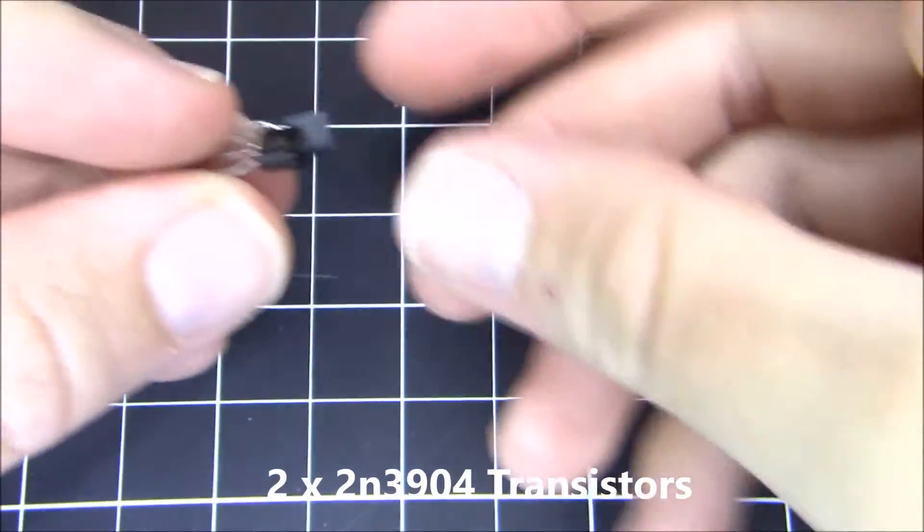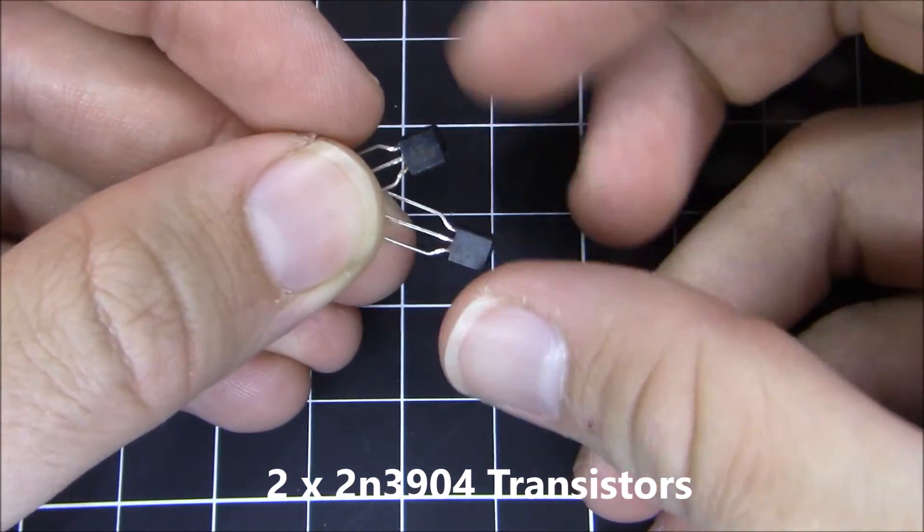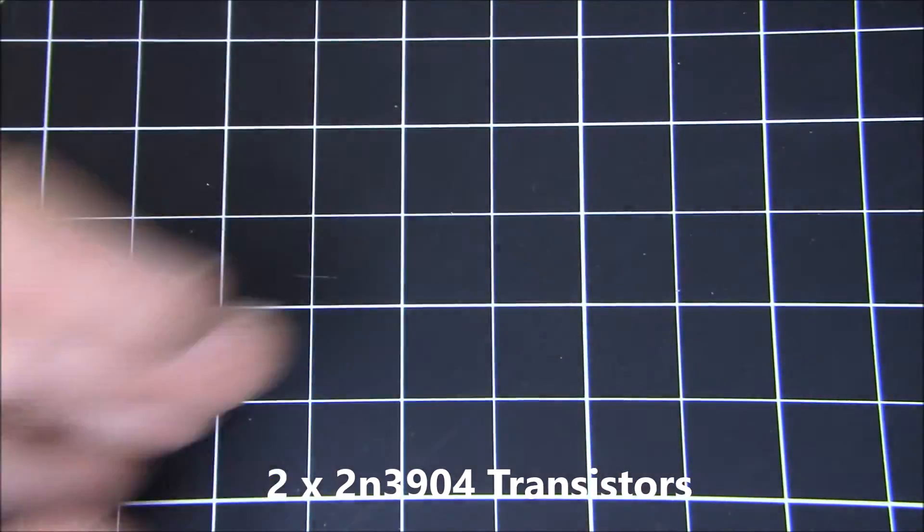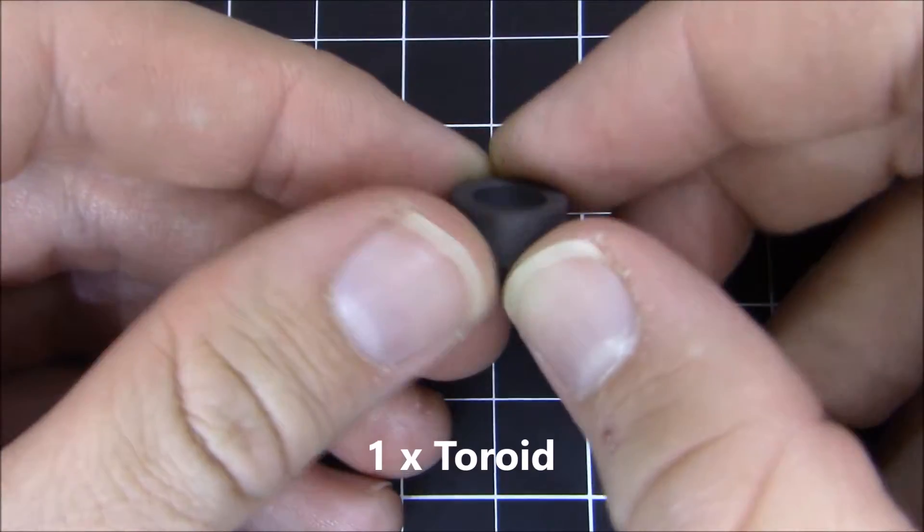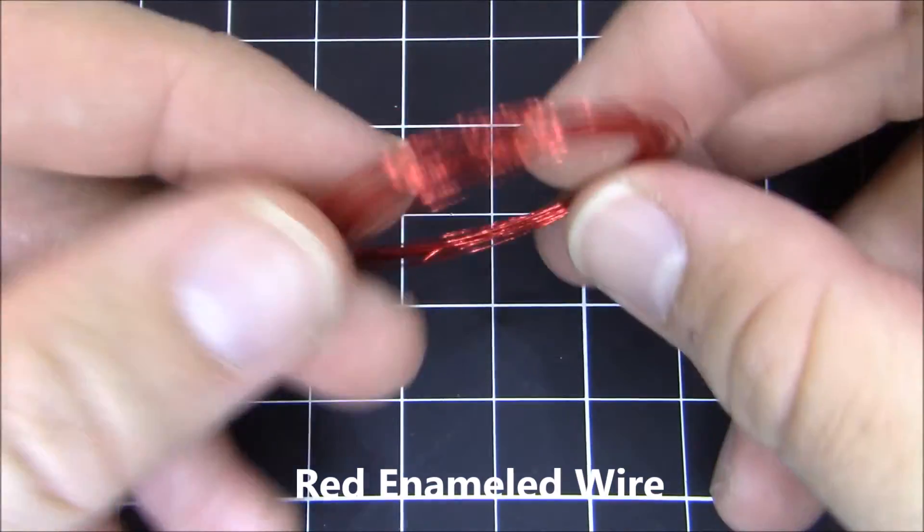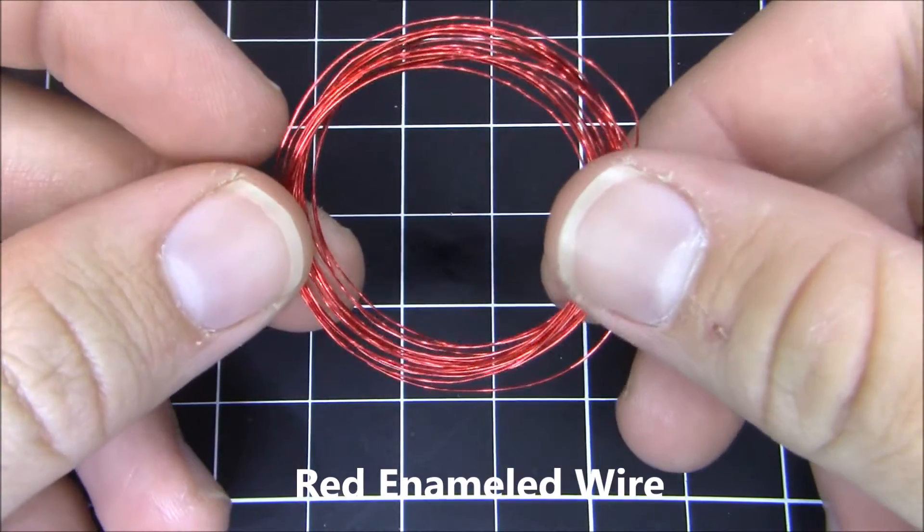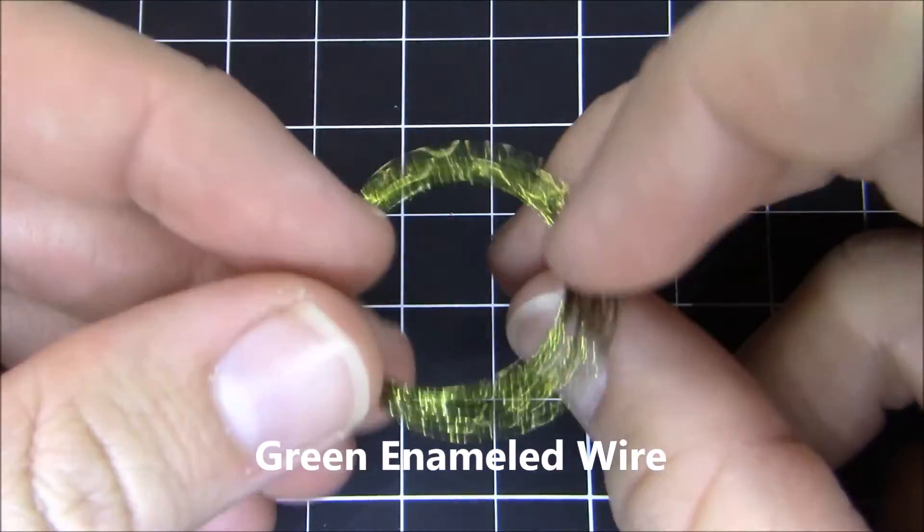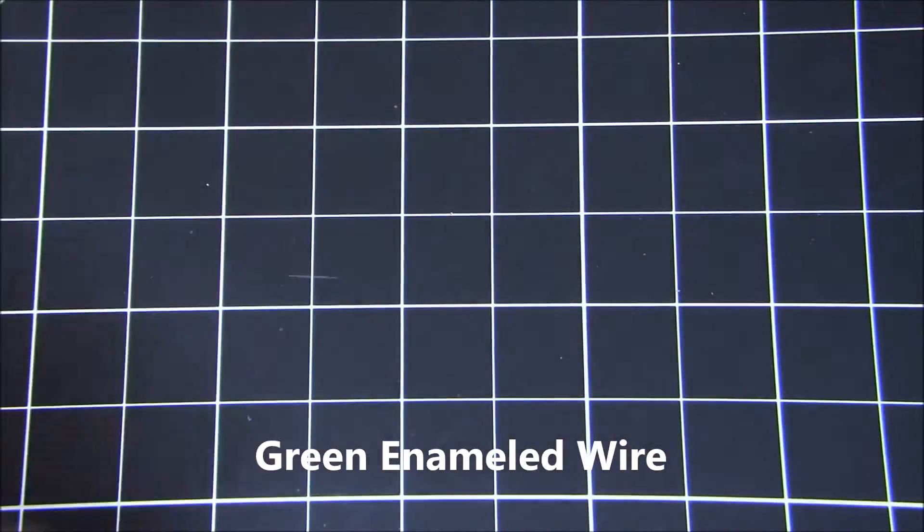You get two 2N3904 transistors and they switch the coil on the toroid. And this is the toroid. It kind of looks like a donut. You get some red enameled wire. You get some green enameled wire.